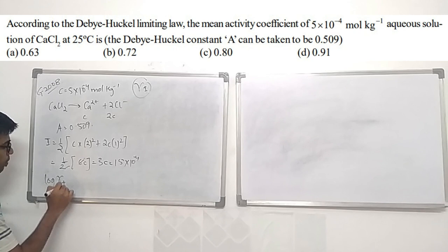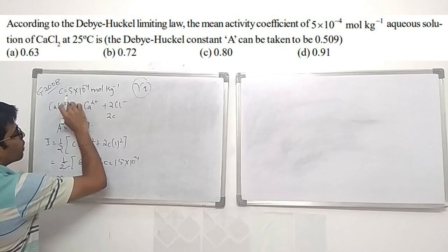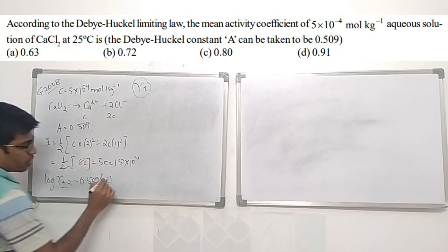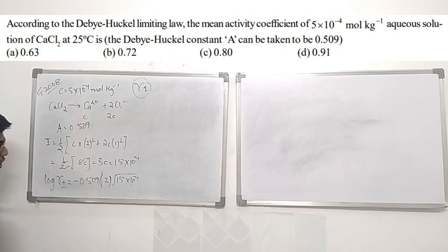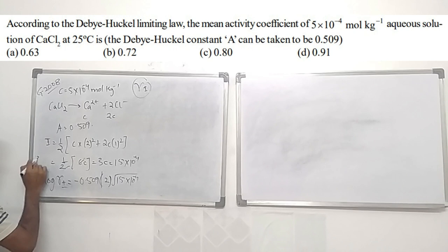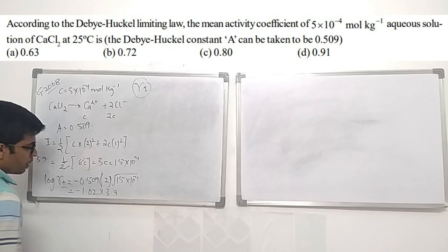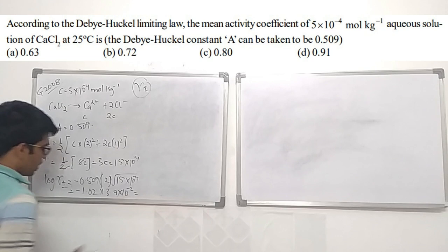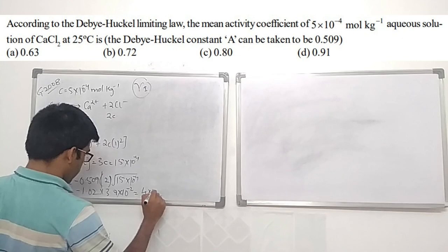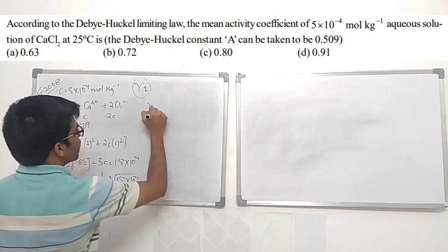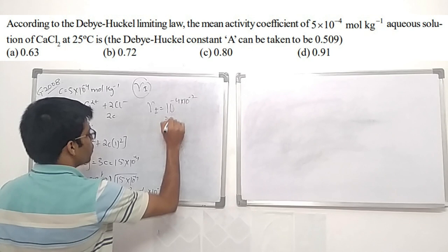Then log γ± = −0.509 × |2×1| × √(15×10⁻⁴). Since √15 ≈ 3.9, we get −0.509 × 2 × 3.9 × 10⁻² ≈ −4×10⁻². Removing the log: γ± = 10^(−4×10⁻²) ≈ 0.91, which is option D.